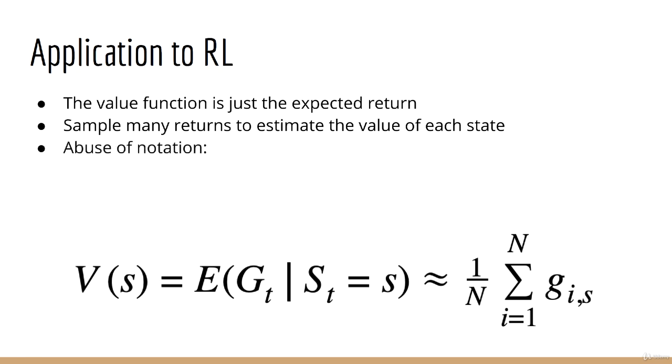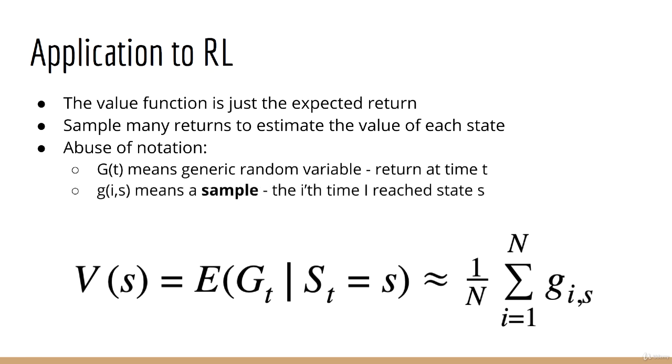You'll notice that I've abused notation a little bit here by using different indices for the return g. When I say g of t, I mean a generic return g, the return for the state at time t. But when I index g using i and s, what I mean is this is a sample of the return. It's the ith sample return from the state s.